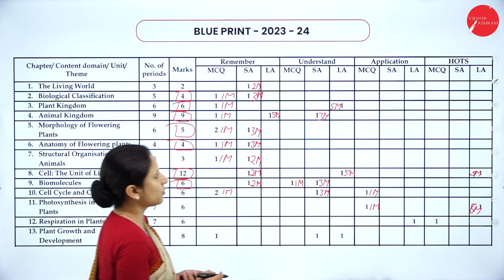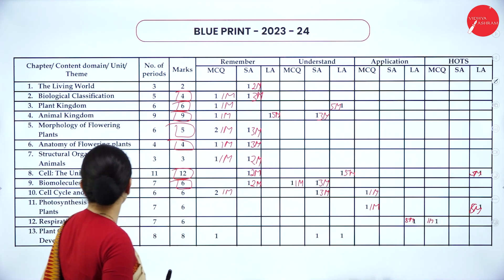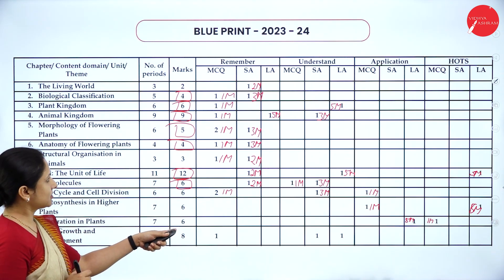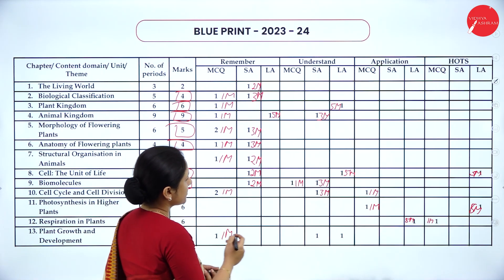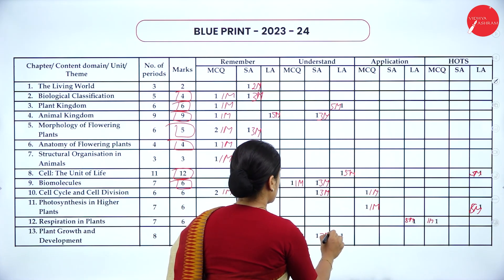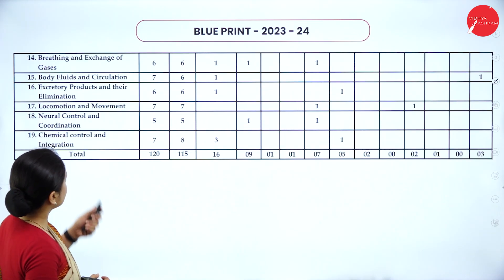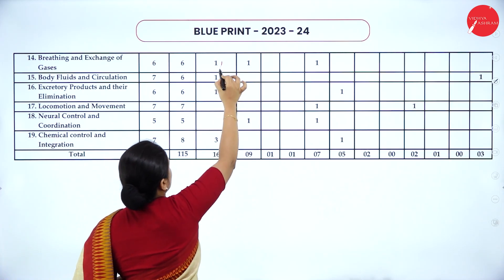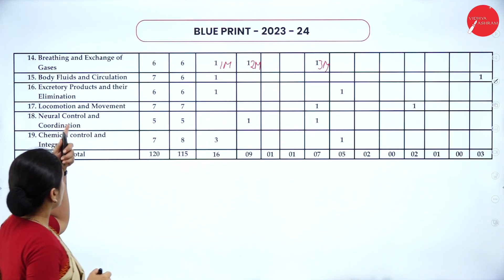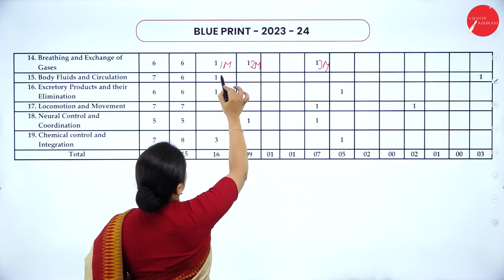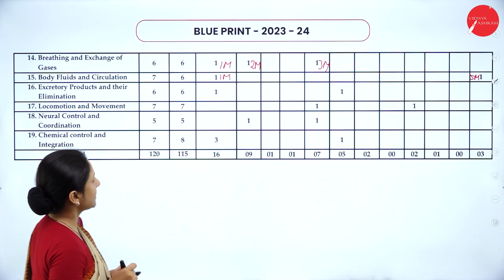Respiration in Plants totals 6 marks: one 5-mark question and one MCQ. Plant Growth and Development is another high-mark chapter — one MCQ, one 2-mark short answer, and one 5-mark long answer. Breathing and Exchange of Gases totals 6 marks: one MCQ, one 3-mark, and one 2-mark question. Body Fluids and Circulation has one MCQ and one 5-mark question, totalling 6 marks.